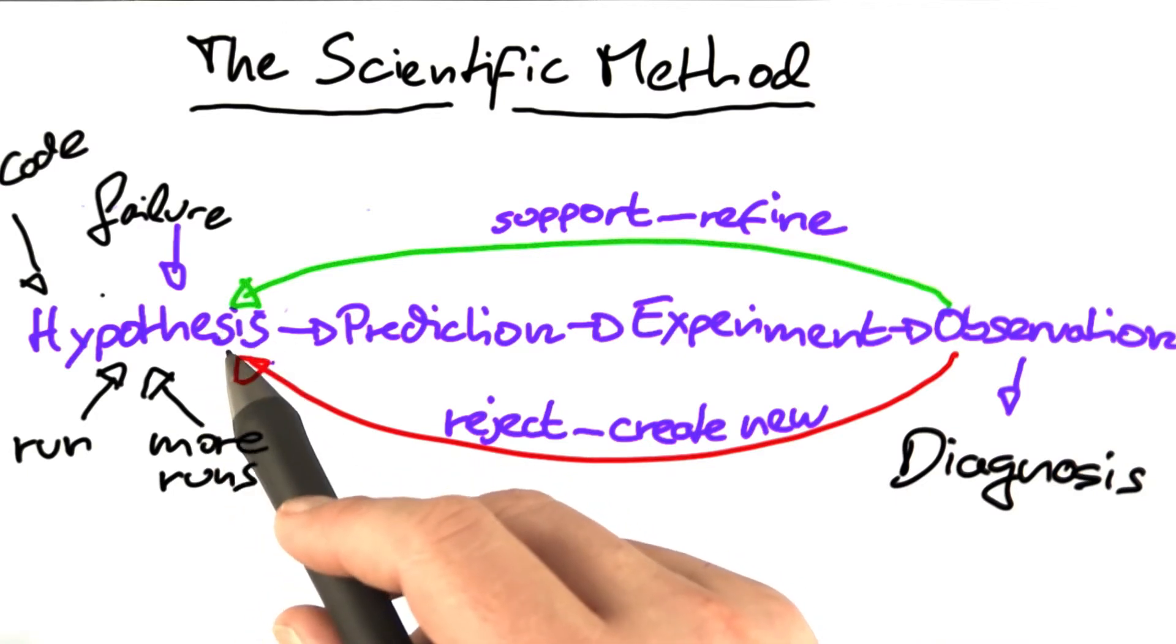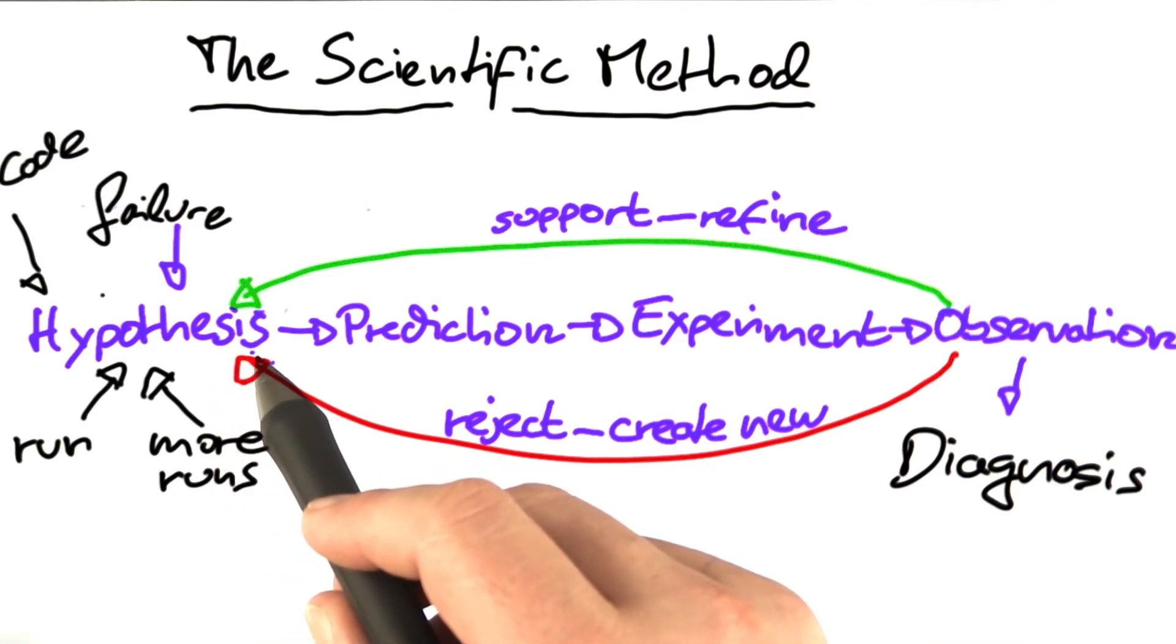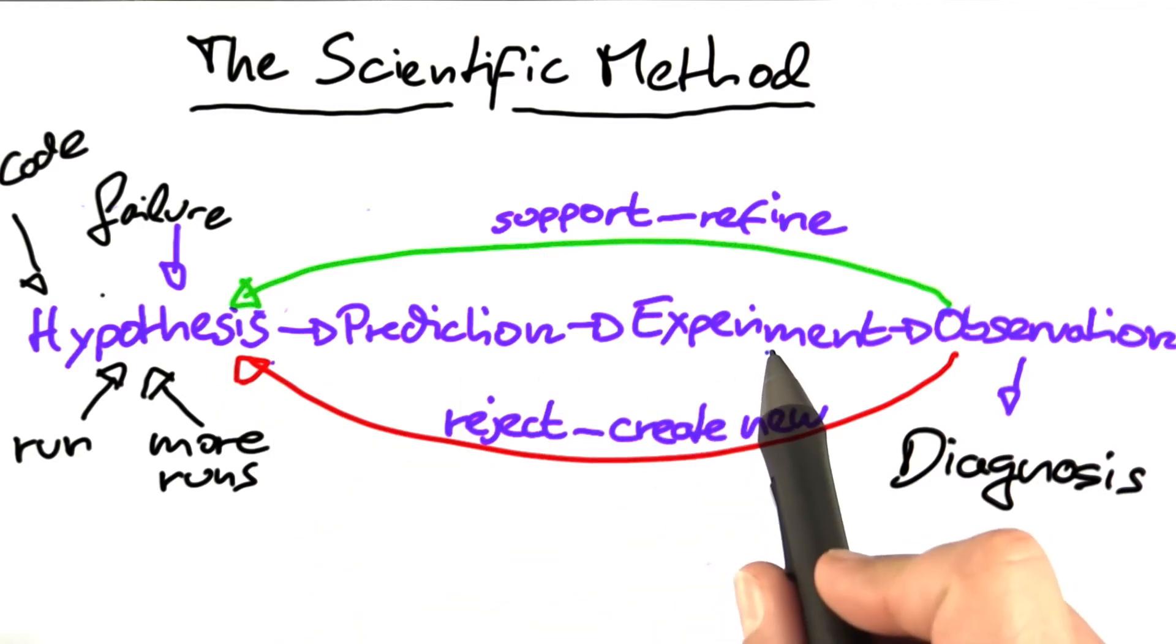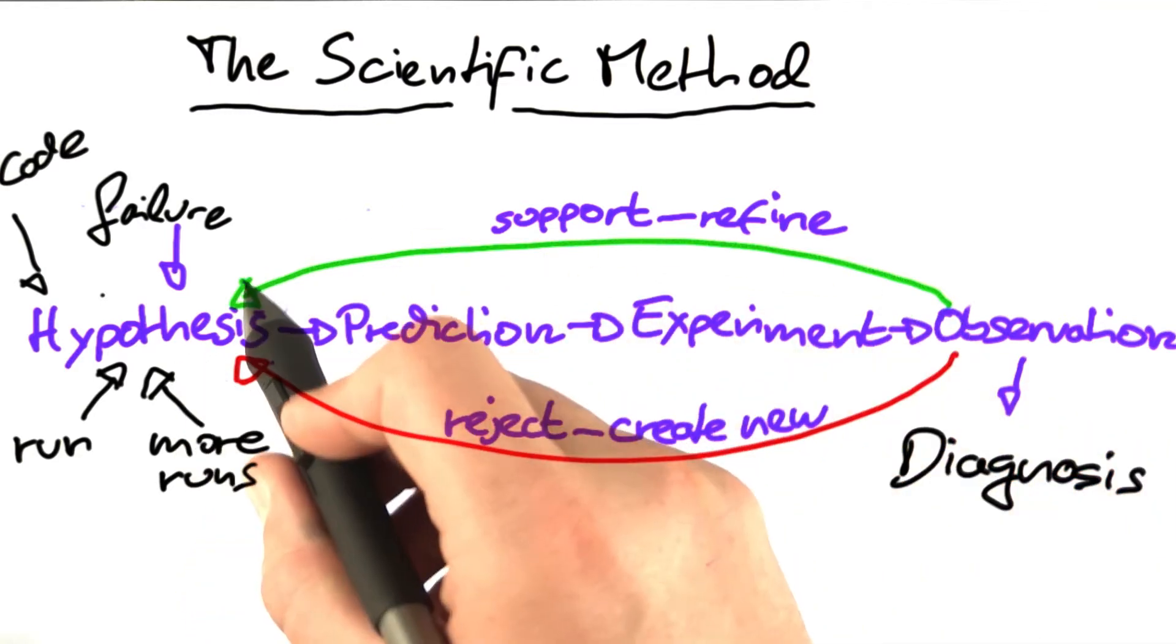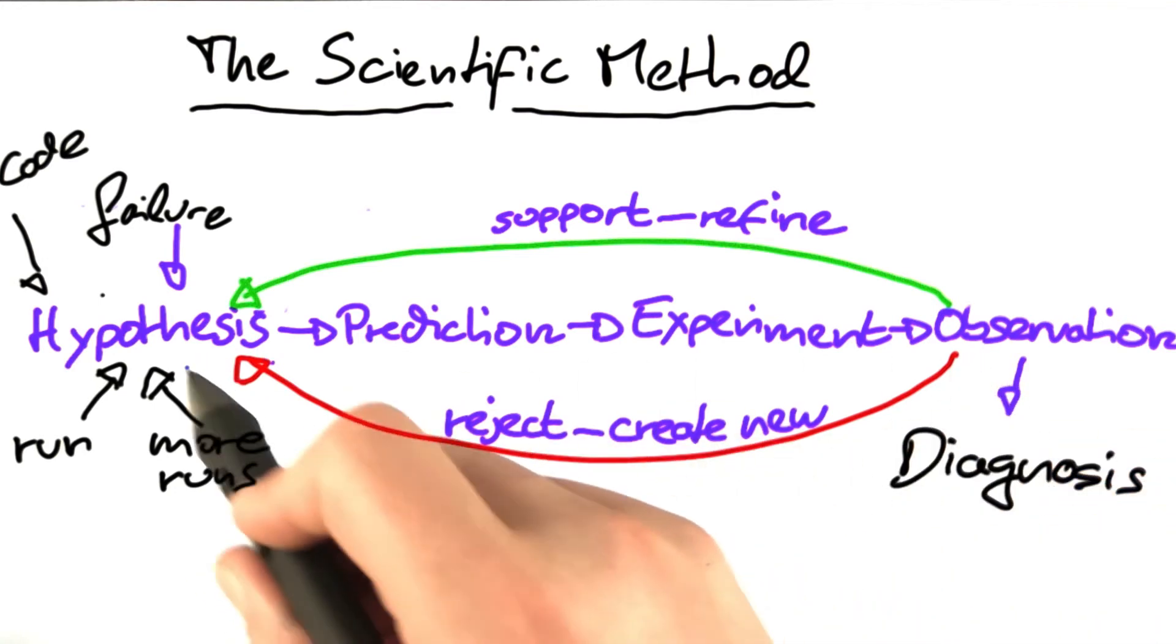If you have two competing hypotheses for the same failure, what you do is you set up an experiment that decides which of the hypotheses is supported and which of the hypotheses is rejected.